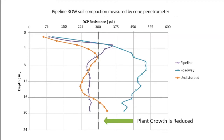On the Y axis we have depth below the soil surface, and on the X axis we have what's called the penetration resistance — like taking a cone penetrometer and pushing it into the soil. Once it reaches about 300 PSI, that's where roots really tend to stop growing. Over the roadway, you hit 300 PSI pretty quickly right below the soil surface, and that's one of the other reasons why we see a reduction in plant growth.